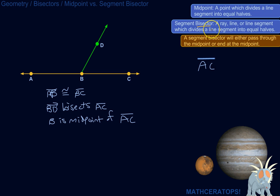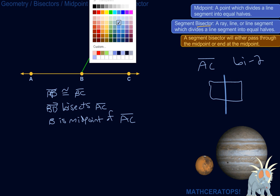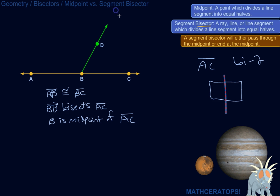Okay, so a segment bisector - well, let's talk about bisection in general. Bi means two, and sect means something like cutting. So like if you dissect a frog, you cut it open. Bisect means to cut something in two, like if I have this box and I cut it in two equal parts. There we go. I've just bisected it.